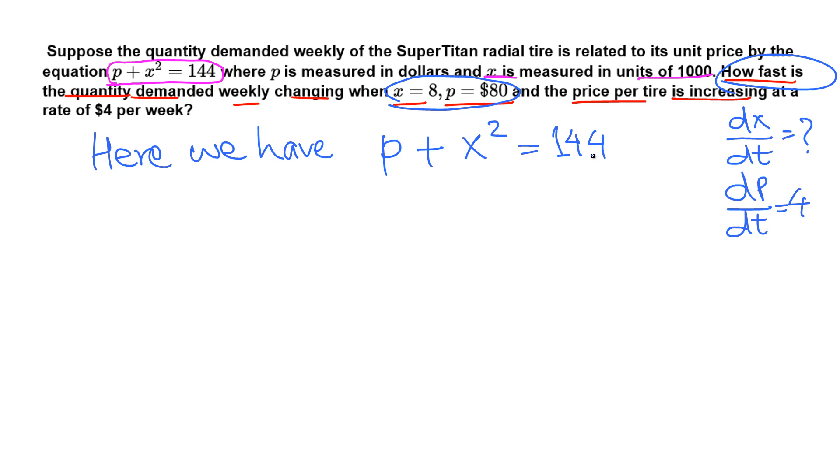P plus X squared equals 144. Differentiate both sides with respect to time. That means d over dt, derivative of left hand side equals the derivative with respect to time of right hand side. So here is P, and P, they are different, so this is just dp over dt.